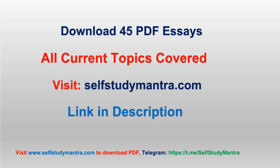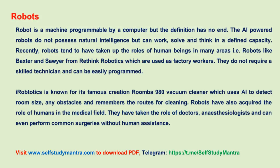Robots: A robot is a machine programmable by a computer. AI-powered robots do not possess natural intelligence, but can work, solve, and think in a defined capacity. Recently, robots have taken up the roles of human beings in many areas — for example, robots like Baxter and Sawyer from Rethink Robotics, which are used as factory workers. They do not require a skilled technician and can be easily programmed. iRobot Roomba 980 vacuum cleaner uses AI to detect room size, any obstacles, and remembers the routes for cleaning.